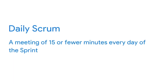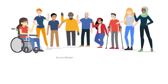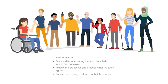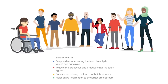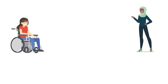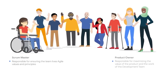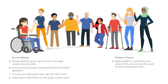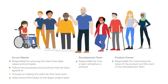There's also a practice called the daily Scrum, also called the stand-up. This is where the team meets for 15 minutes or less every day of the sprint to inspect their progress toward their goal. Next are the roles. The first is the Scrum Master, responsible for ensuring that the team lives Agile values and principles, follows the processes and practices the team agreed to, shares information to the larger project team, and helps the team focus on doing their best work. The other notable role is the product owner, responsible for maximizing the value of the product and the work of the team. The product owner owns the inventory of work and has the final say on how to prioritize it, while the development team is responsible for how the team will deliver that product.